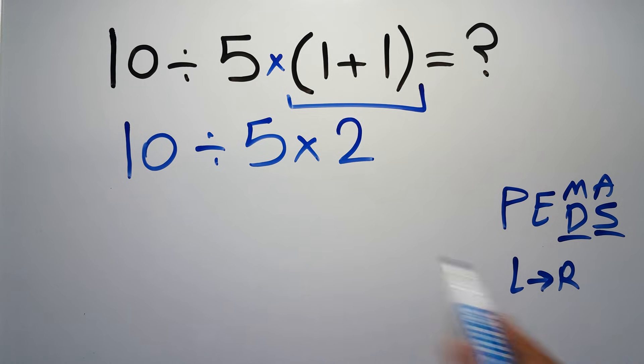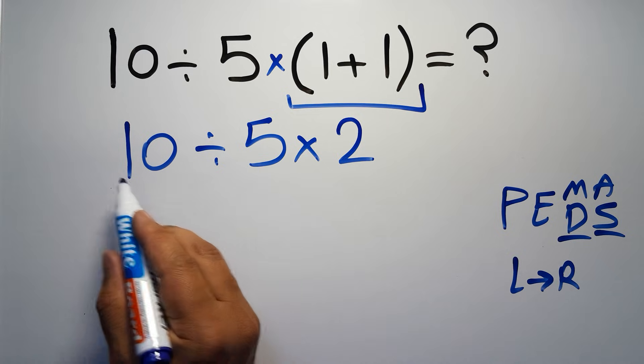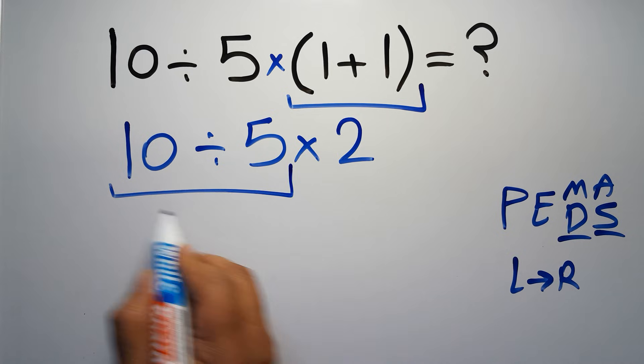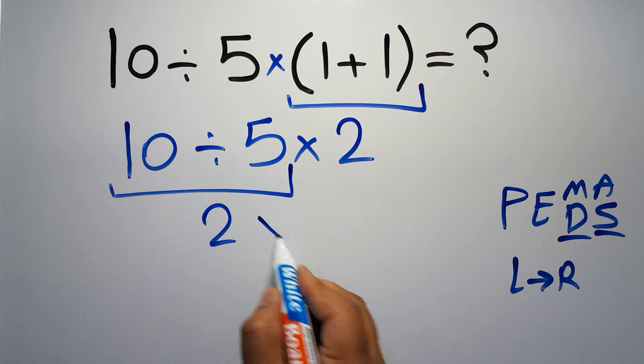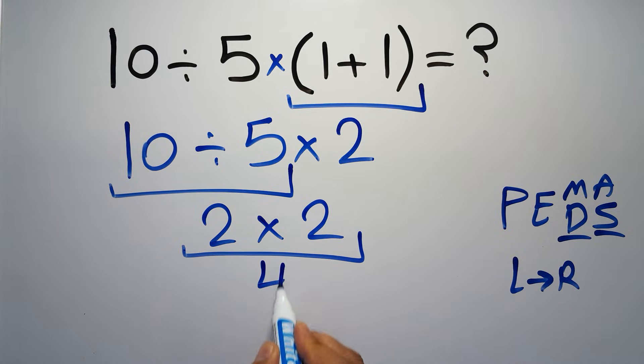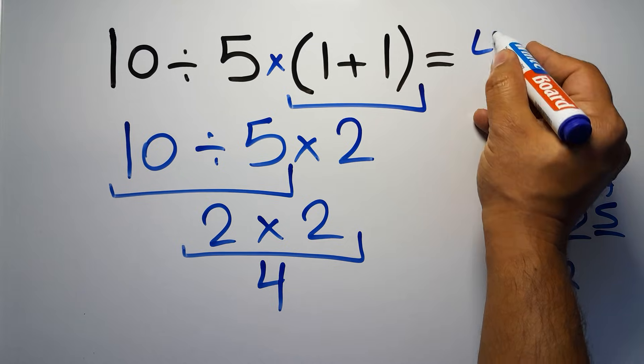So here, first we have to do this division. 10 divided by 5 gives us 2, so 2 times 2, which equals 4. This is our final answer to this problem. The correct answer is 4.